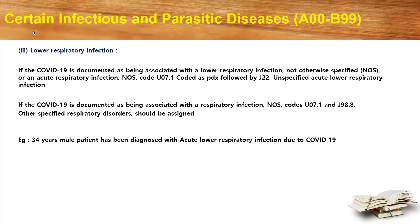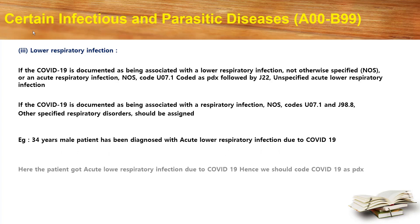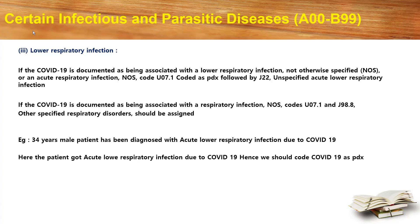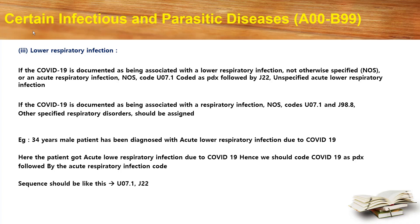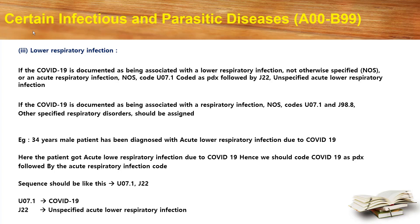Let's look at an example. A 34-year-old male patient has been diagnosed with acute lower respiratory infection due to COVID-19. Here the patient got acute lower respiratory infection due to COVID-19. Hence we should code COVID-19 as primary diagnosis followed by the acute respiratory infection code. The sequence would be U07.1 and J22. U07.1 is COVID-19 and J22 is unspecified acute lower respiratory infection.